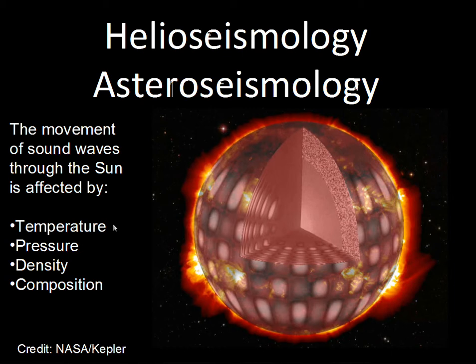Astronomers can get information on the temperature, pressure, density, and composition inside the star — underneath the photosphere. This is done not just for the Sun but also for stars that are relatively close and relatively large. Astronomers gain this information by analyzing the motion at the photosphere due to sound waves that roam back and forth in the star.